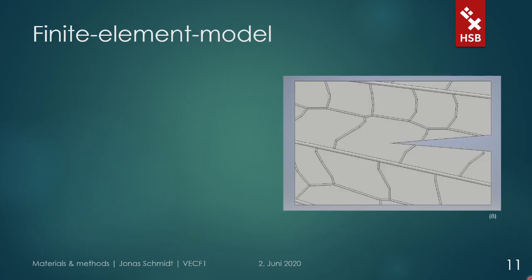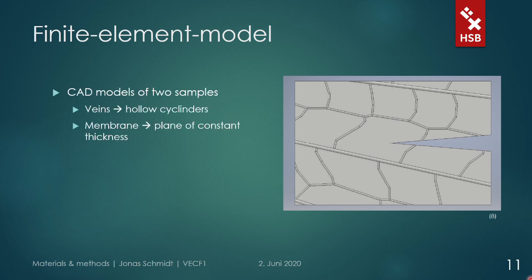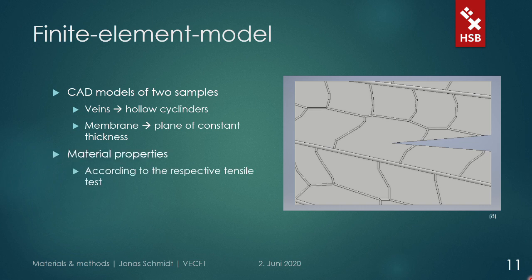Two of the tested samples were modeled, with some simplifications. The veins were modeled as hollow cylinders of two types: small cross veins and thicker longitudinal veins. The membrane was abstracted to be a plane of constant thickness. The dimensions were obtained from electron microscope pictures of the tested wings. The material properties were assigned based on the respective tensile test and literature values for Poisson's ratio as well as the ultimate tensile strength, as we couldn't determine it from the tensile test with crack propagation.